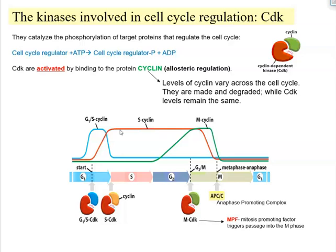M cyclin initiates the transition to the mitotic phase and is then degraded. The levels of cyclin vary across the cell cycle — once a particular phase is complete, that cyclin is degraded. Two important complexes: MPF, mitosis-promoting factor, triggers passage into the M phase, and the anaphase-promoting complex (APC) initiates separation of chromatids, which later become chromosomes.